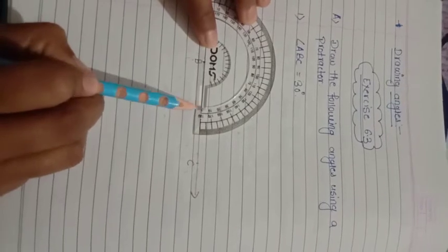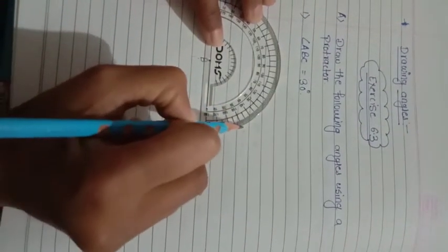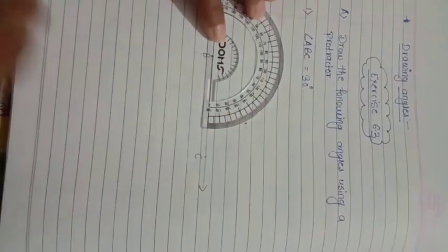This is 0 degrees, this is 10, this is 20, this is 30. So here I am going to mark the point at 30 degrees.